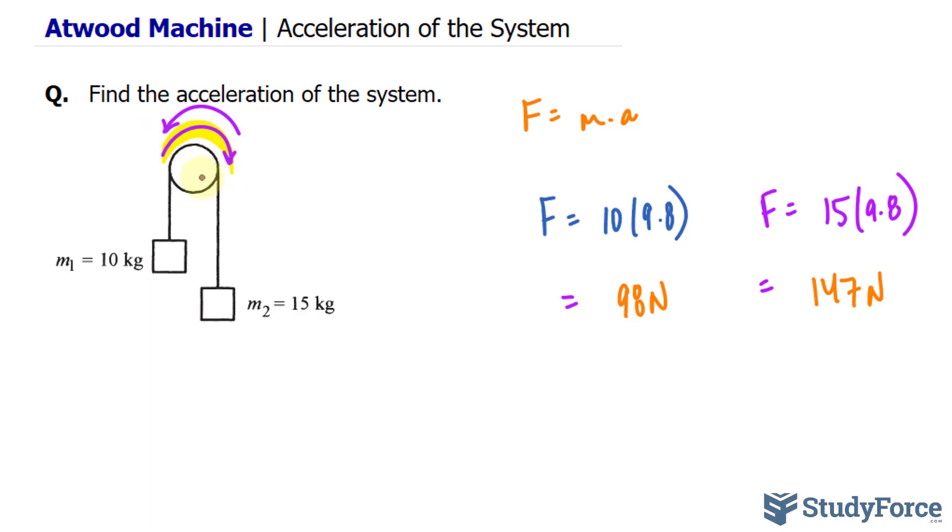For example, since I assumed it is clockwise, I'll say that for mass one, we have T, that represents tension, minus the force, which we found out to be 98, is equal to the mass of 10 times an unknown acceleration. Because these two masses are connected, there's one acceleration and one tension.